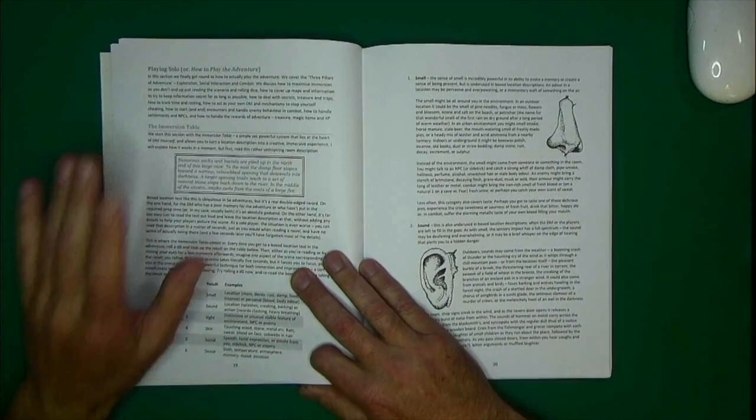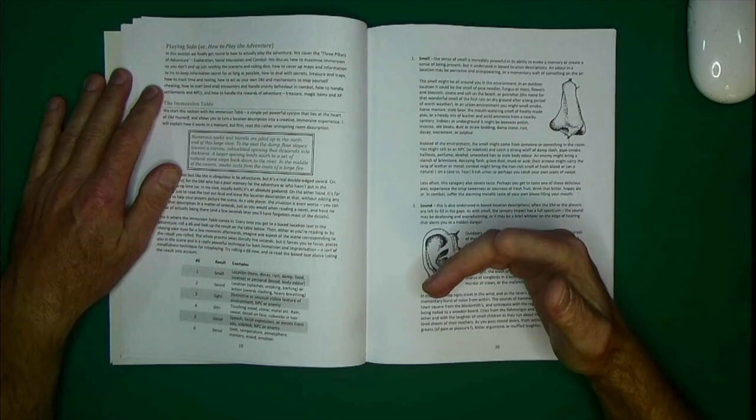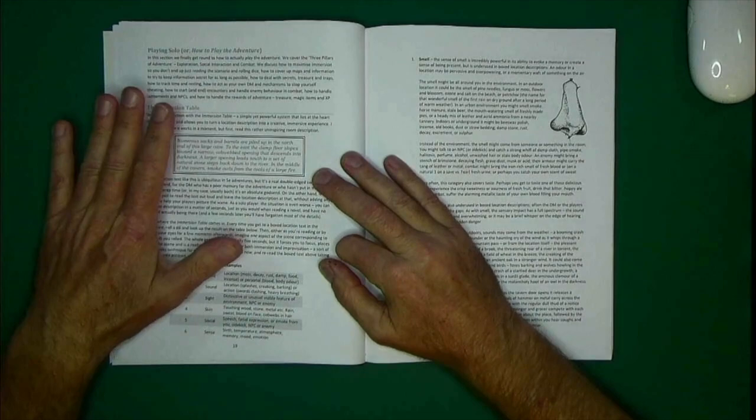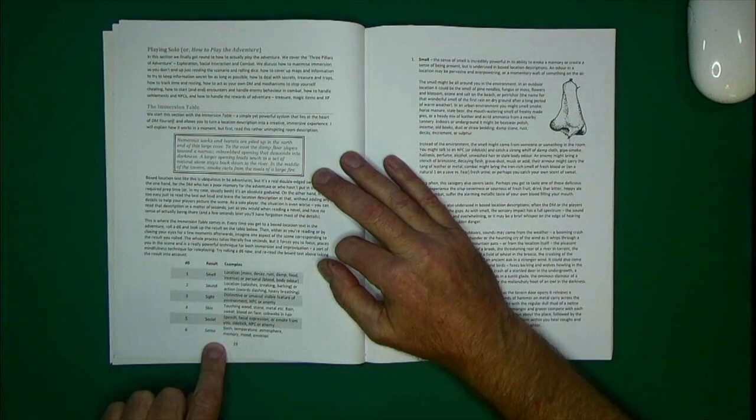And then moving on, this is called the Immersion Table. I really, really like this. So, as a solo gamer, sometimes we can get lost in trying to articulate all the details of a room. We're rolling on charts, we're looking up all these things, and we're trying to describe a room. And this Immersion Table just kind of streamlines it, just gets it really quick and down and dirty.